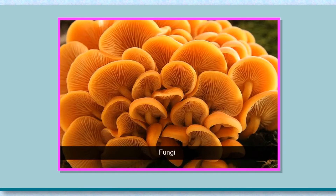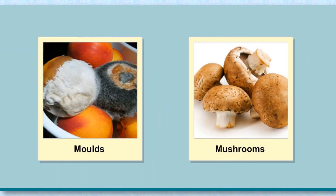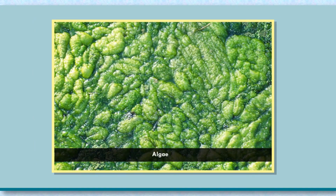Fungi are a group of diverse organisms that feed on decaying matter. They are like plants but do not have chlorophyll, so they cannot carry out photosynthesis. Some fungi are unicellular like yeast; others are multicellular like moulds and mushrooms.